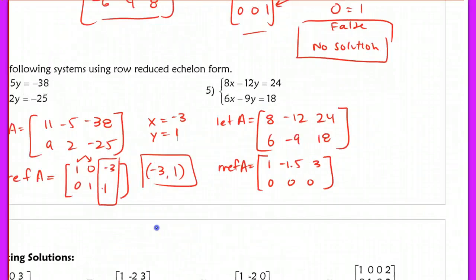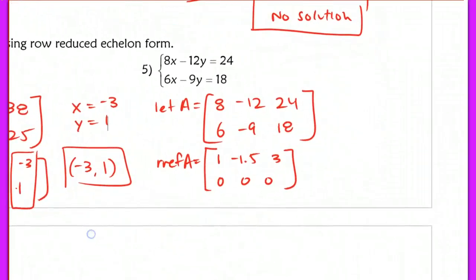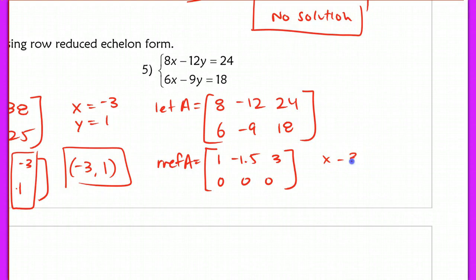I want to interpret this solution. Looking at this solution here, this is saying in the first line, x minus 3 halves y, or negative 1.5y, it doesn't matter, I just changed it to a fraction, is equal to 3. And on the bottom, it says 0x plus 0y equals 0.